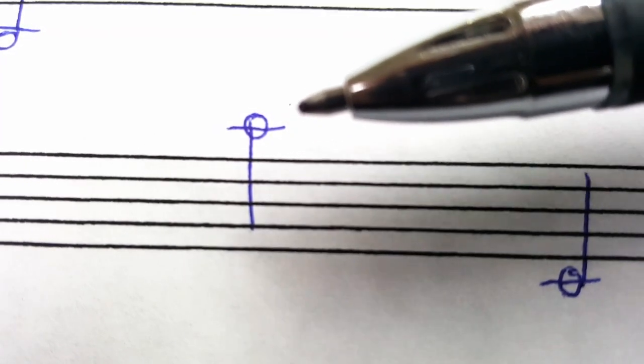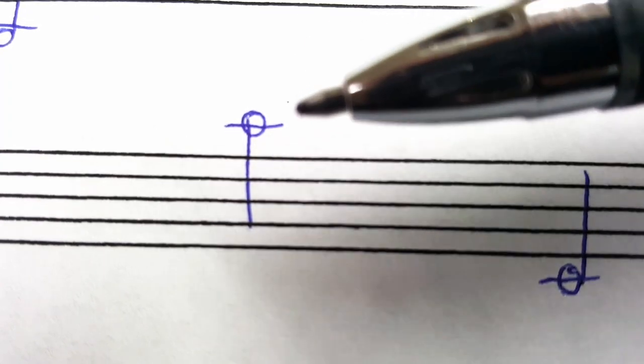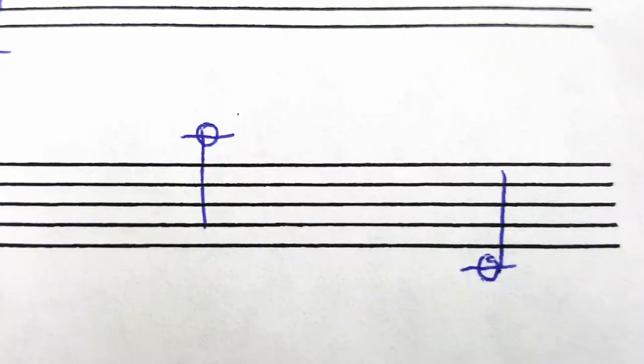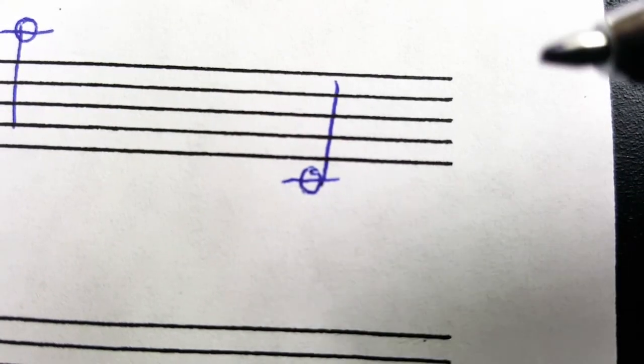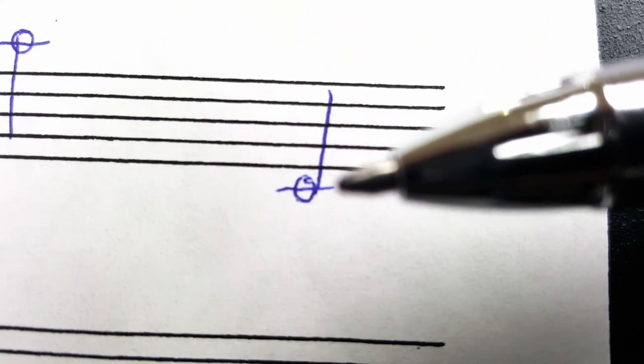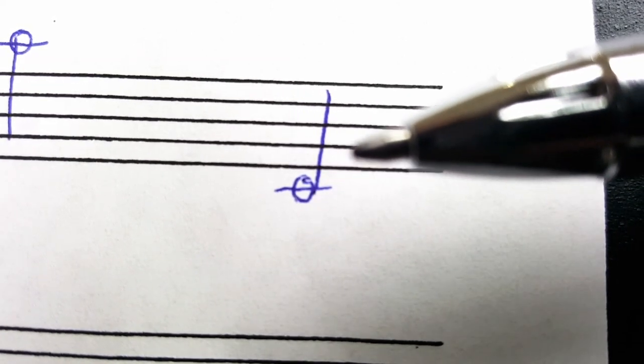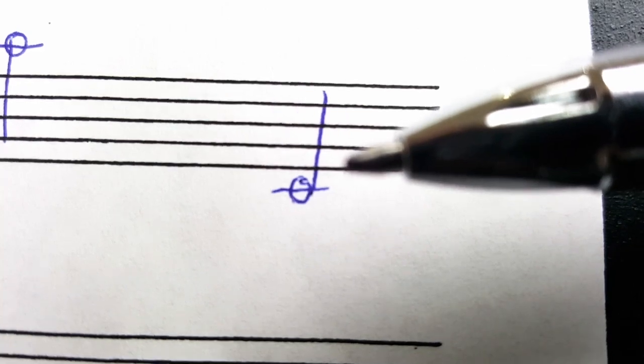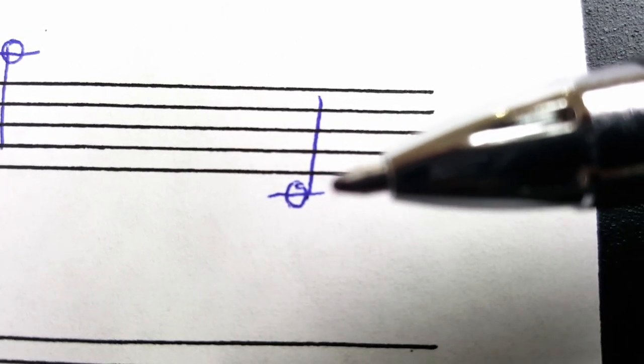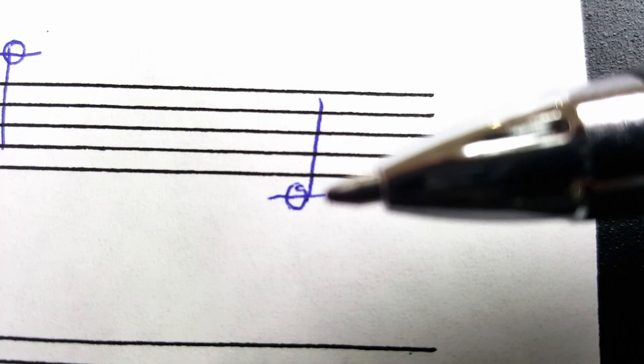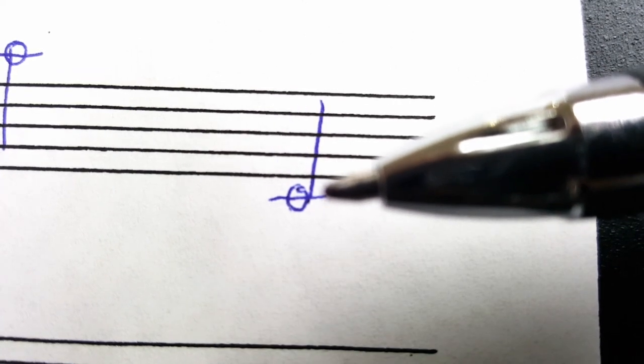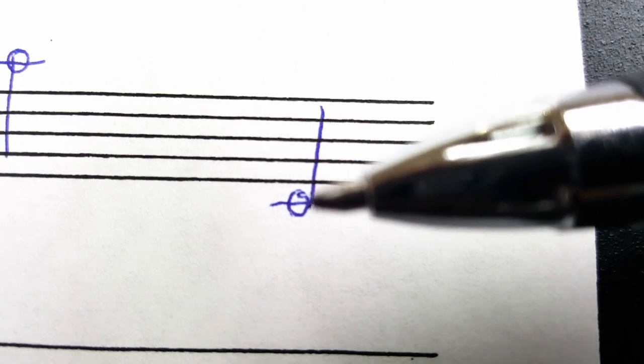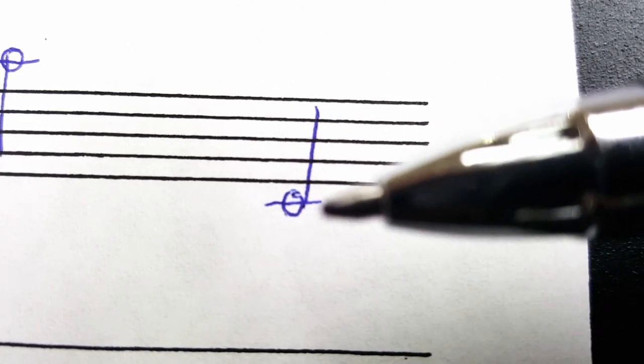And you would keep going up above the staff alphabetically, line, space, line, space. Here's another example in bass clef. You notice that it's below the staff. So you would have to say to yourself, well, what's the name of the first line in bass clef? That is G. The space below that is F, and this note on this line is E. If you had other notes below this, you would just continue to go backwards in the alphabet to figure out the line or space for that name of the note.